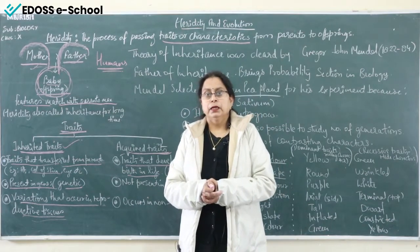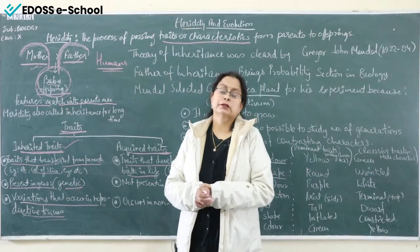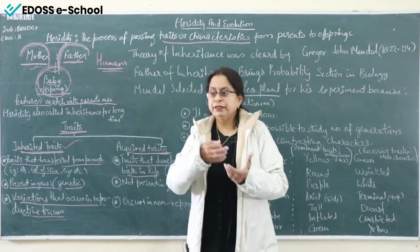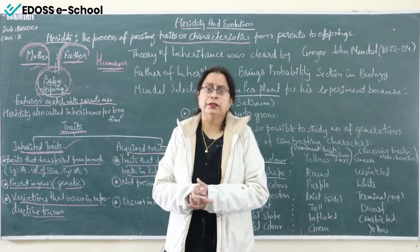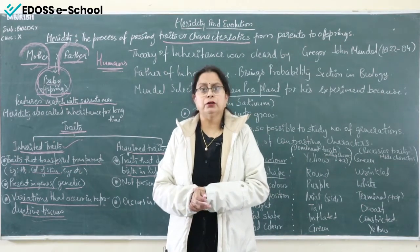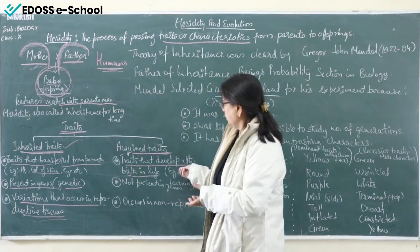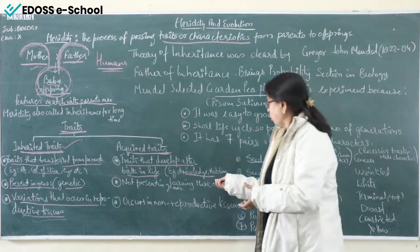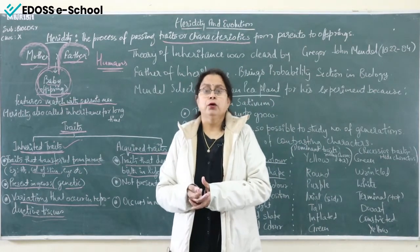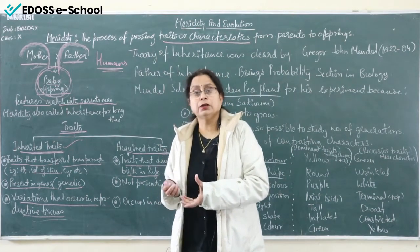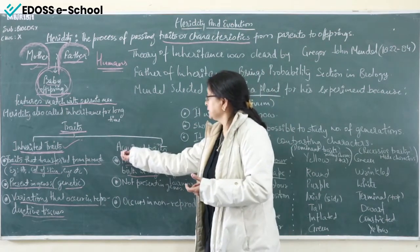Examples of acquired traits: if we are hardworking, through hard work we may get a better education and become a doctor or engineer. That is our achievement, not inherited from parents. Even if both parents are doctors, their offspring will not necessarily be a doctor — because this is not inherited. Similarly, learning to play guitar, singing, or other skills achieved by one's own effort are examples of acquired traits.